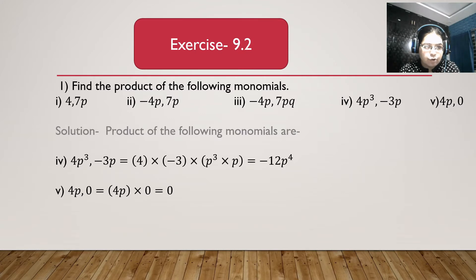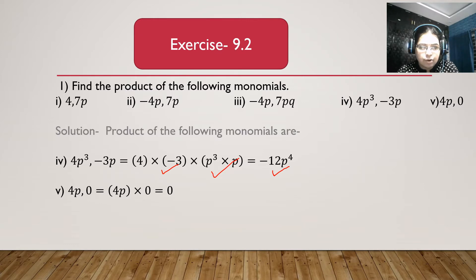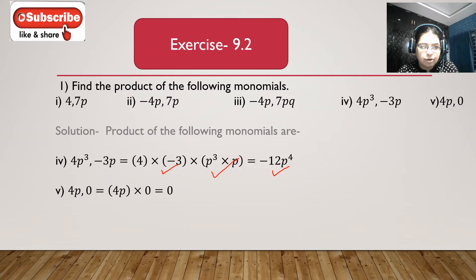Fourth bit: 4p cube and minus 3p. 4p cube multiplied with minus 3p gives 4 multiplied with minus 3 is minus 12, and p cube multiplied with p is p to the power 3 plus 1, which is p to the power 4. So we get minus 12p to the power 4. Fifth bit: 4p and 0. 4p multiplied with 0 gives 0.